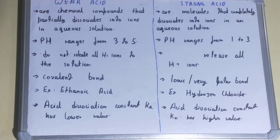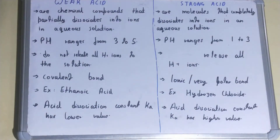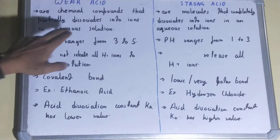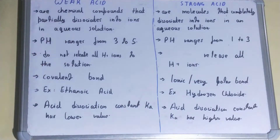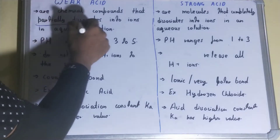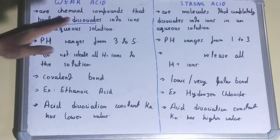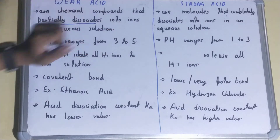In this video, we will be looking at the difference between weak acids and strong acids. Weak acids are chemical compounds that partially dissociate into ions in aqueous solution — whenever you dissolve a weak acid in aqueous solution, it will only partially dissociate into ions.